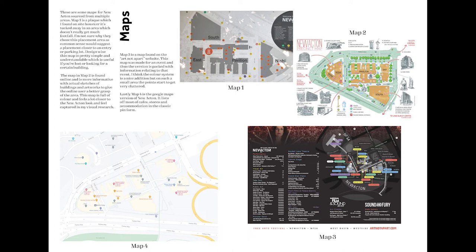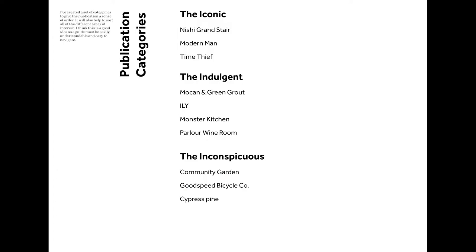Map 4 is the classic Google Maps version, with a main focus on the cafes, stores and accommodation. For my publication, I've added categories which will help give a sense of order to the guide — I think this is crucial for an easy to navigate booklet. Here are the main headings: the iconic, the indulgent, and the inconspicuous. I think these capture the themes which are most likely to attract a social media audience.